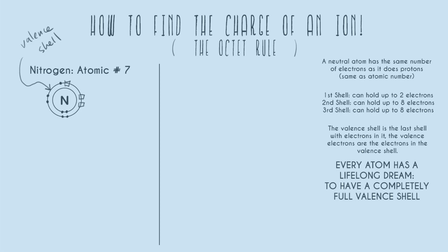Let's say that nitrogen fulfills its lifelong dream and somehow gains three more electrons. It will still have its two in the first orbital, and now it will have a total of eight in the second orbital, completely filling it. Before, when nitrogen just had its regular seven electrons, we'd say it was unhappy. But now that it has three more electrons and its valence shell is full, we'd say it's happy — it's fulfilled its lifelong goal.